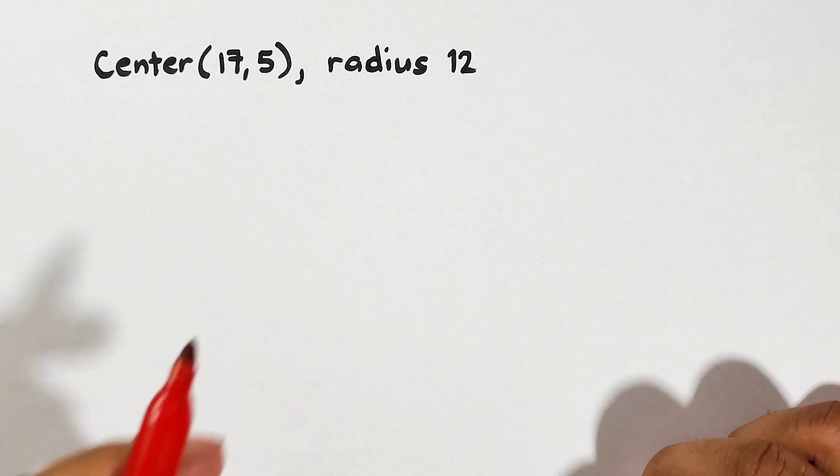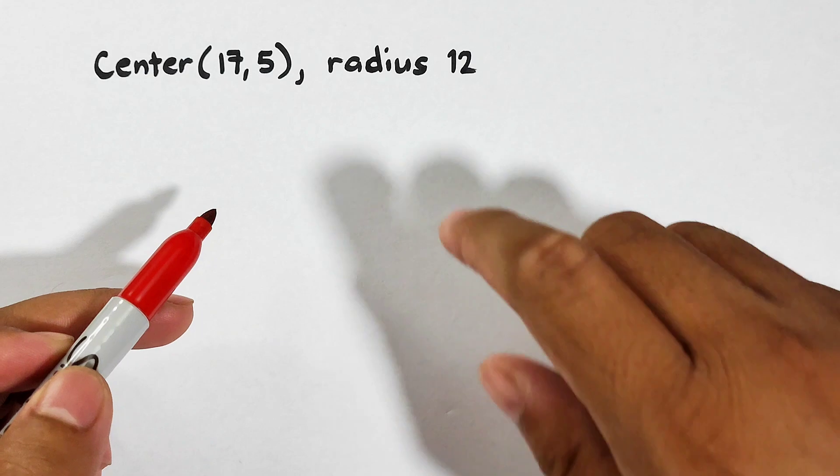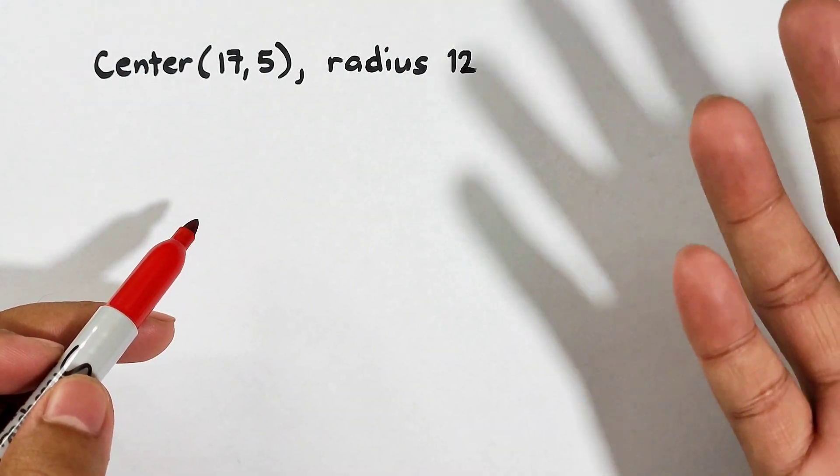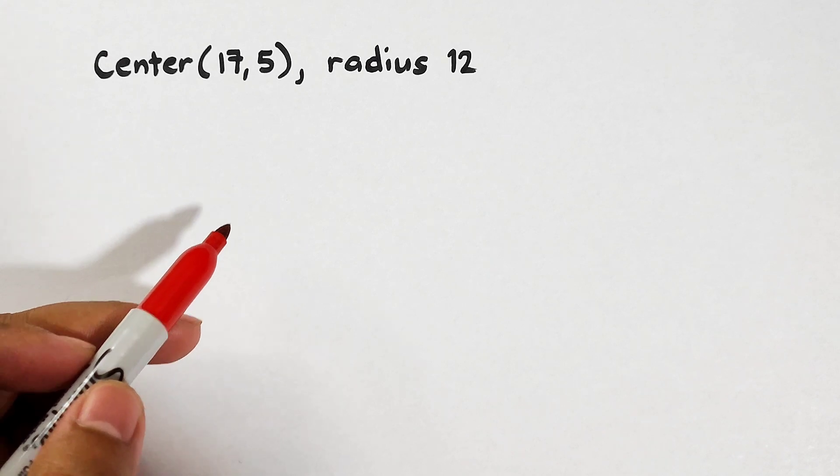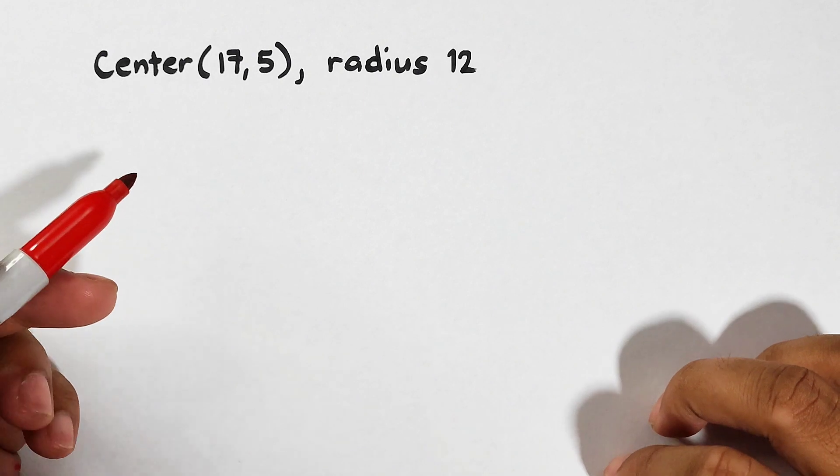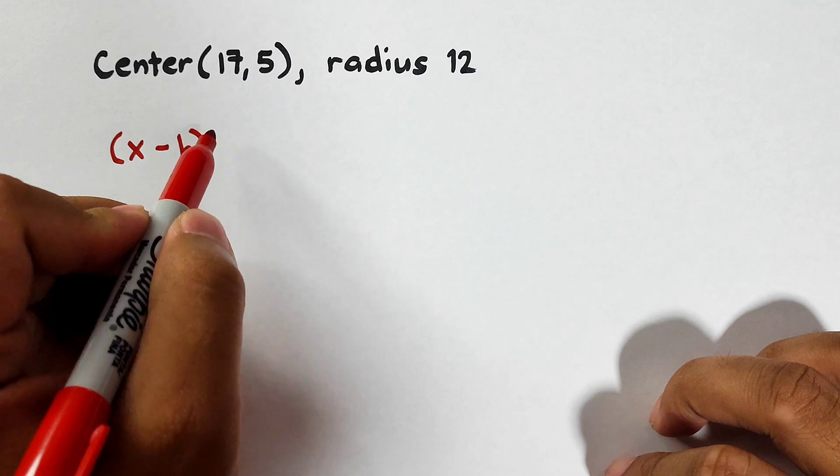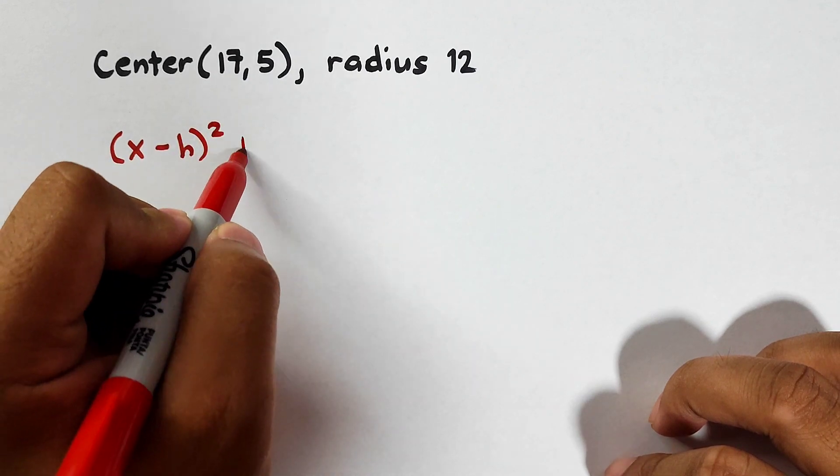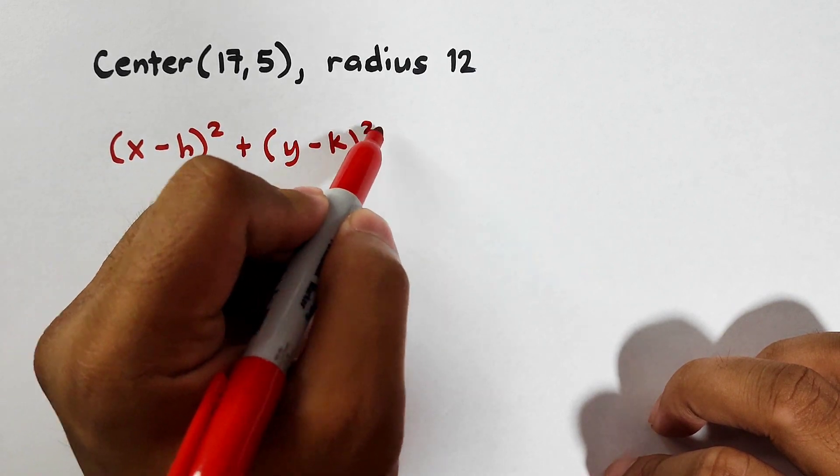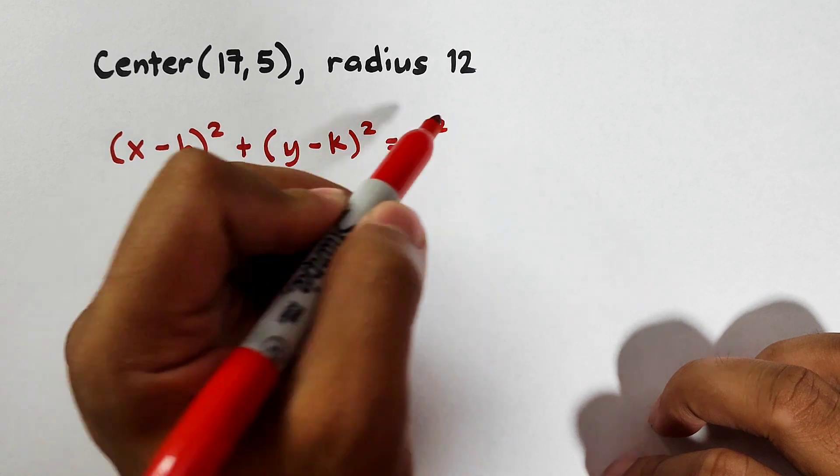So what we have here example number one wherein we are given the center of the circle which is 17, 5 and then for the radius we have 12. Now for us to find the equation of the circle we will be using the standard form or the center radius form of any circle. So we have here x minus h squared plus y minus k squared is equal to the radius raised to the second power.